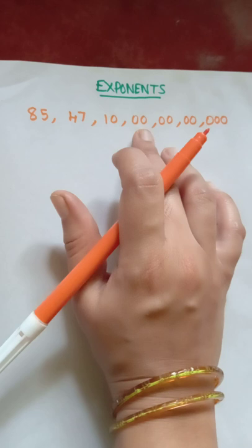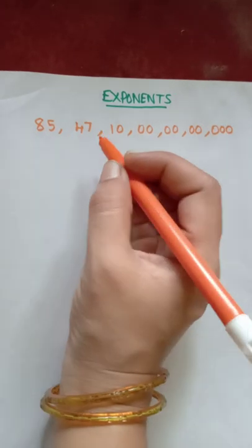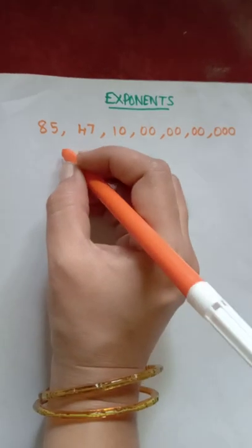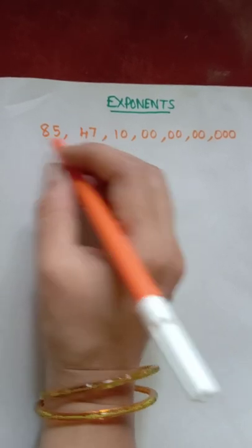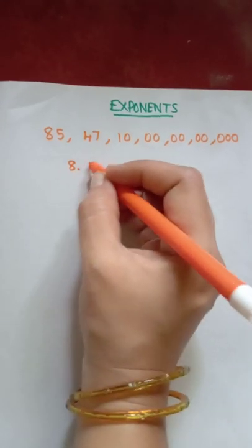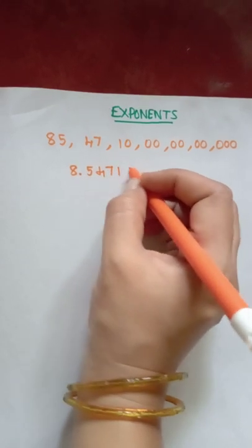So in that case you need something called exponents. So in exponent form this number can be written as 8.5471 into, see here, count leaving 8, count the number of digits.